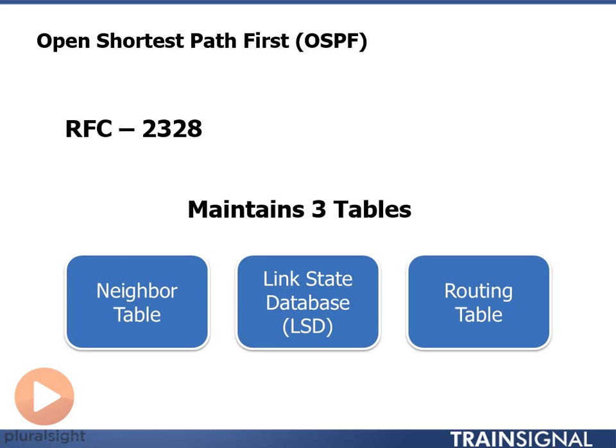OSPF maintains three separate tables in order to dynamically create the routing table, with the routing table itself being one of those three tables.